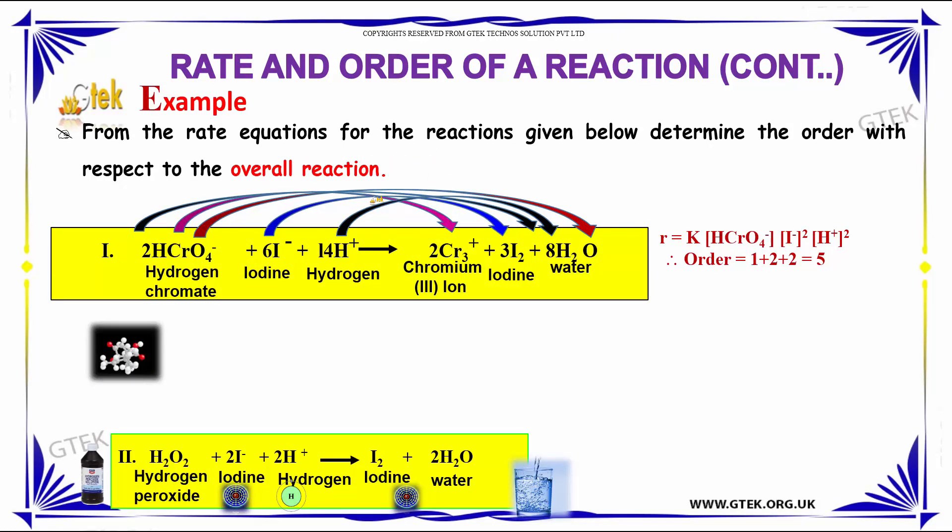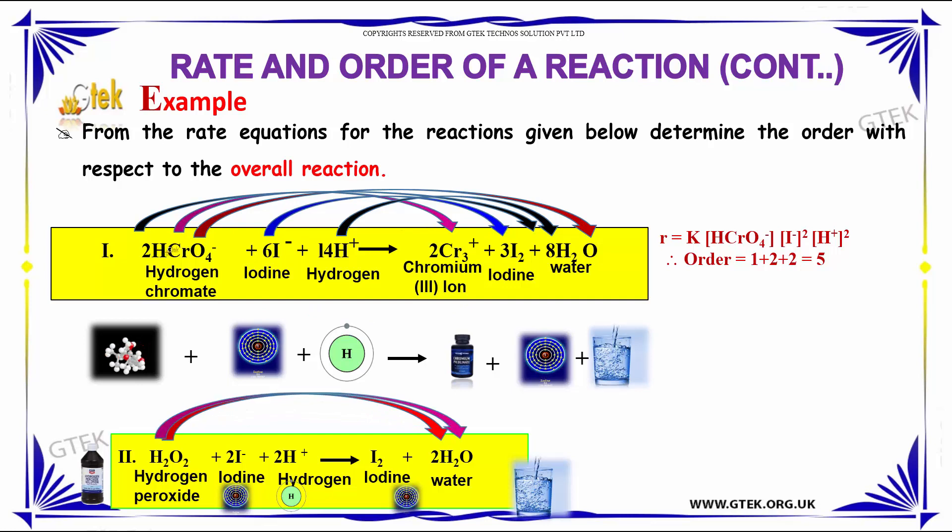So from the rate equation for the reactions, here is the overall reaction. I got hydrogen chromate mixed with iodine and hydrogen gives chromium ion, iodine and water. Over here, hydrogen chromate, the rate of order is 1 and for iodine it's 2 and for hydrogen ion is 2. So the overall order is 1 plus 2 plus 2 is 5.